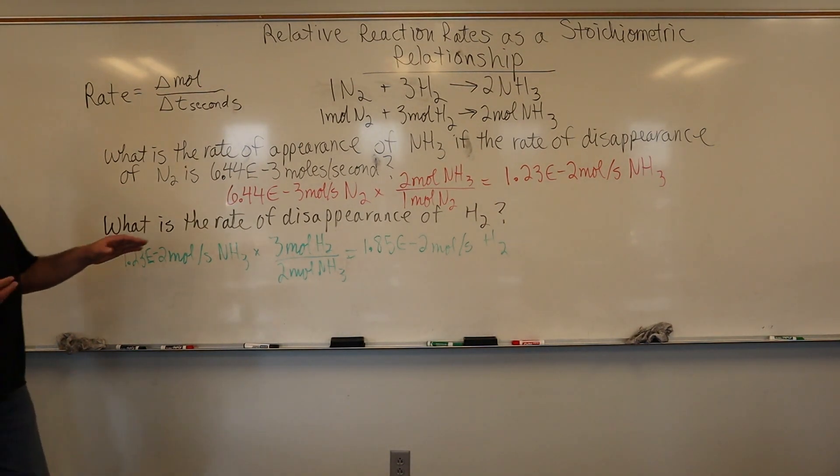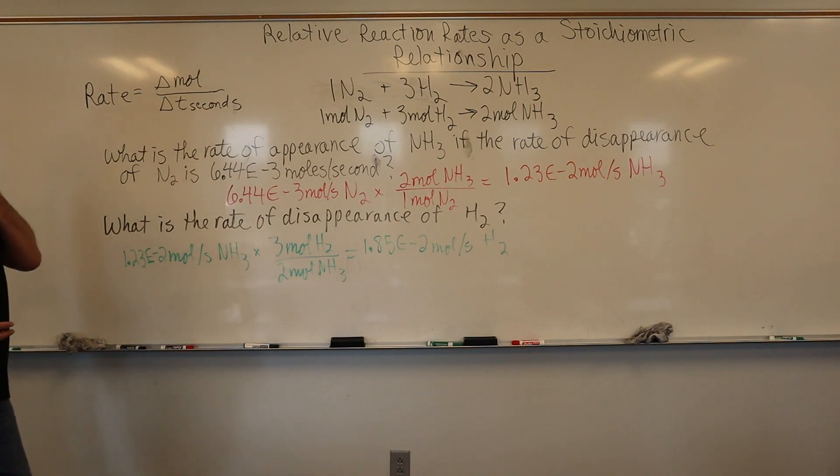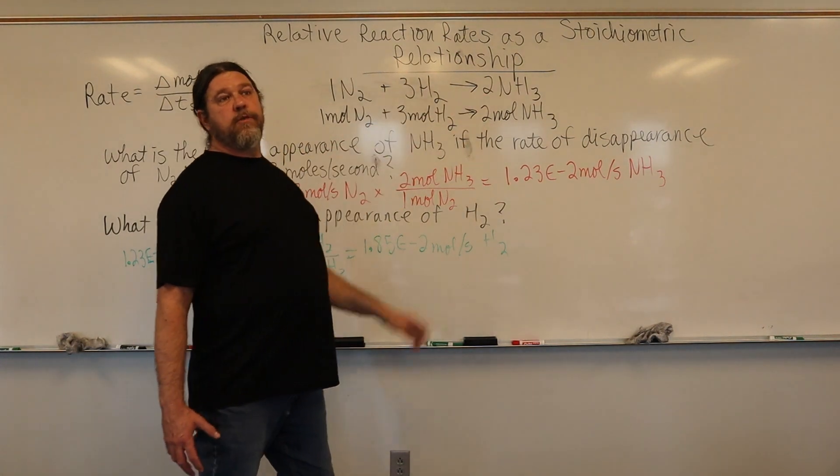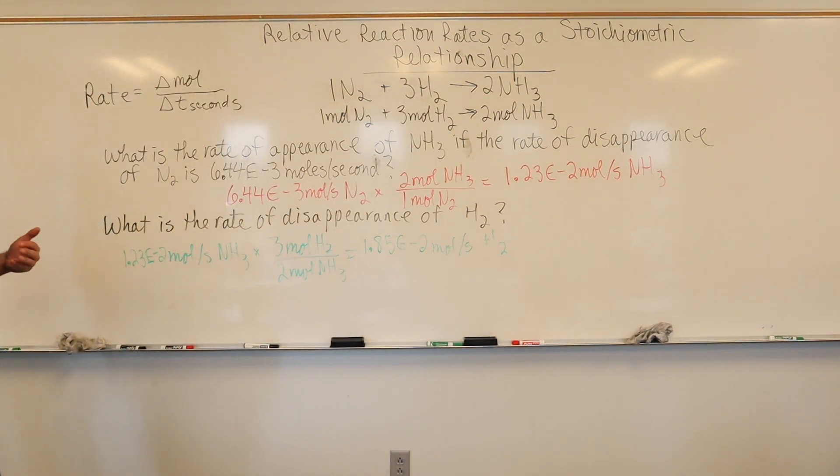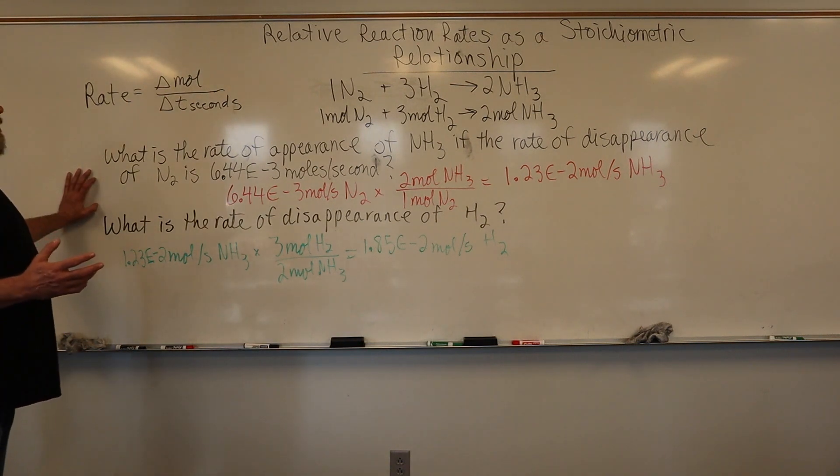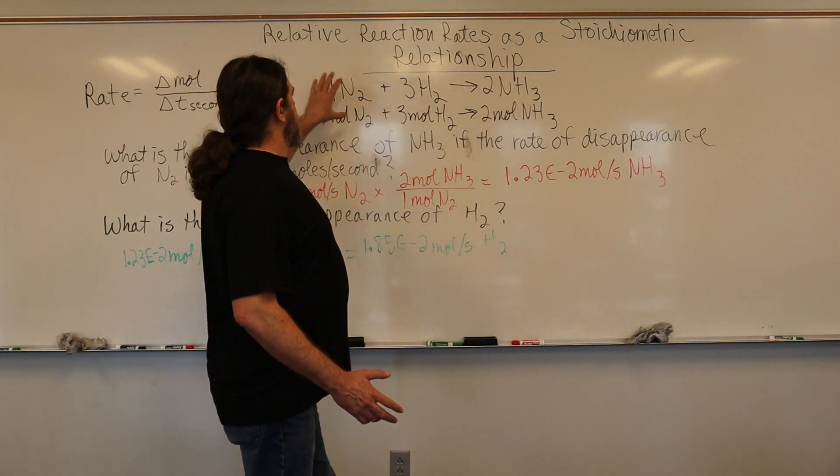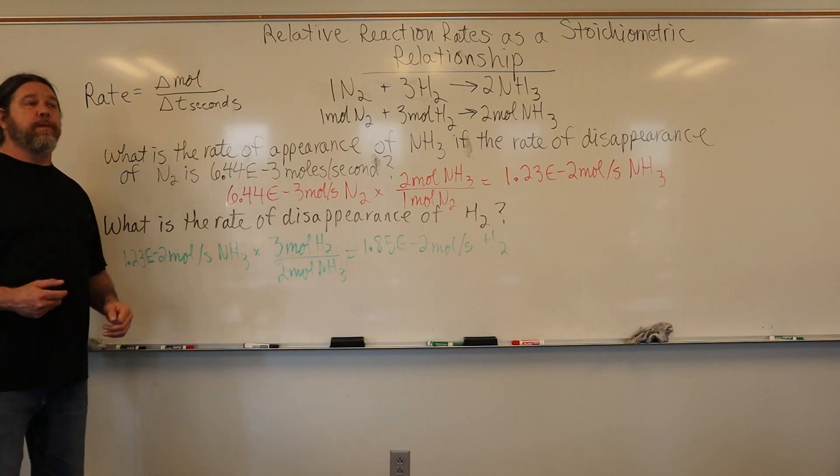Because we are thinking of this in terms of moles per second, then there must be an equivalence based on this balanced equation for ammonia and for hydrogen. The first question we have here is: how much ammonia is being produced on a molar level as nitrogen disappears? Because that product is appearing while reactants are disappearing.